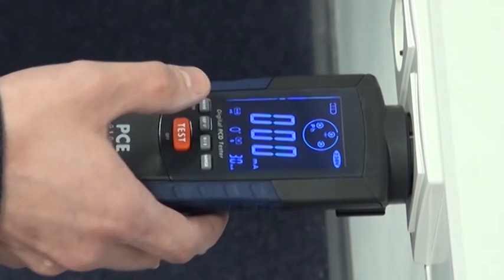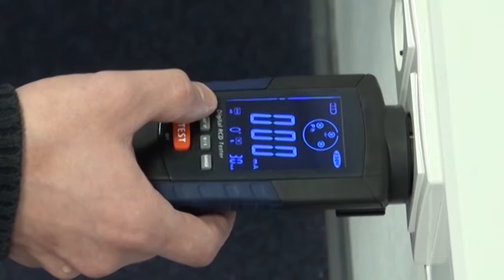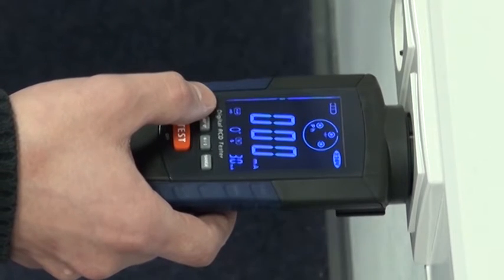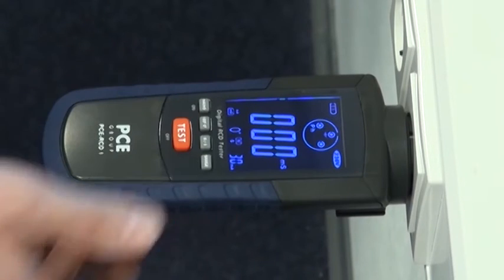The ACD1 is suitable for measuring the testing current at which the FI triggers. Furthermore, the triggering time can be measured in milliseconds.